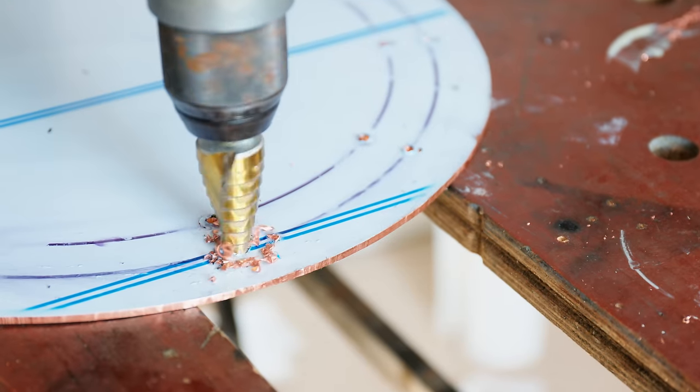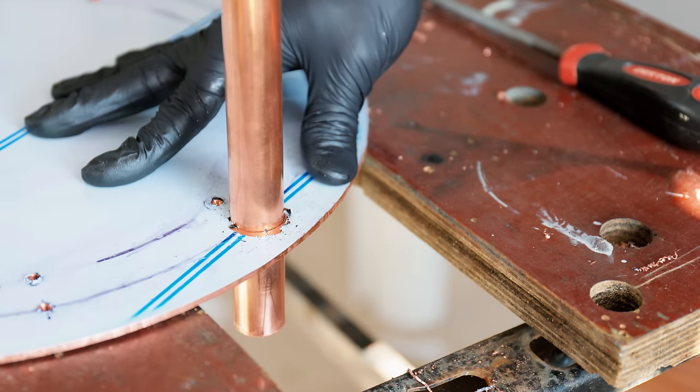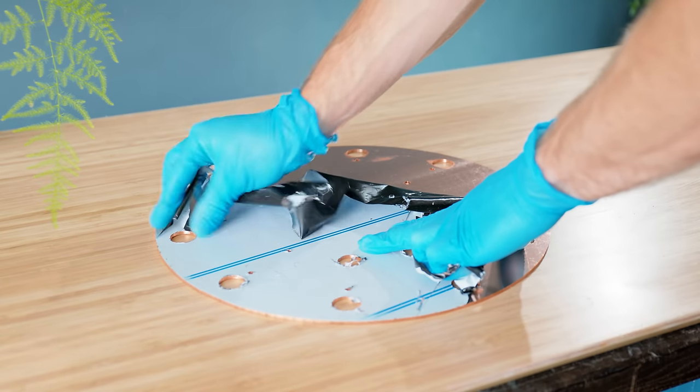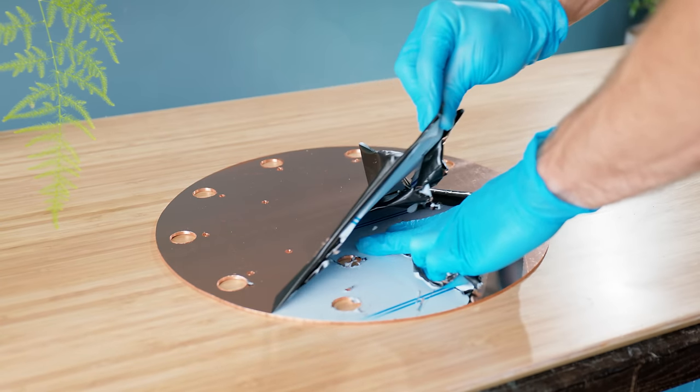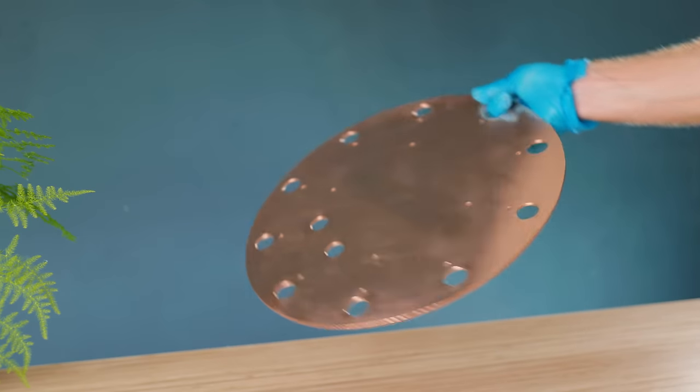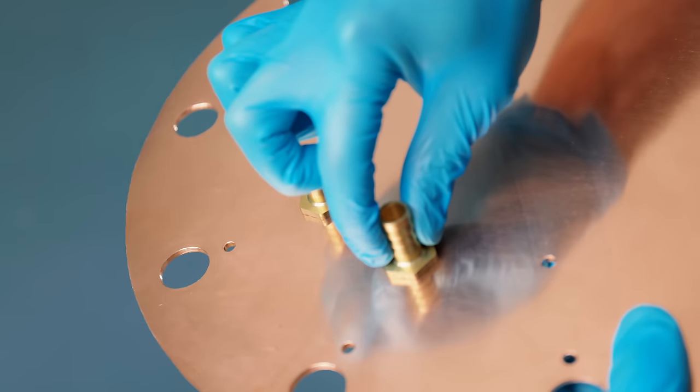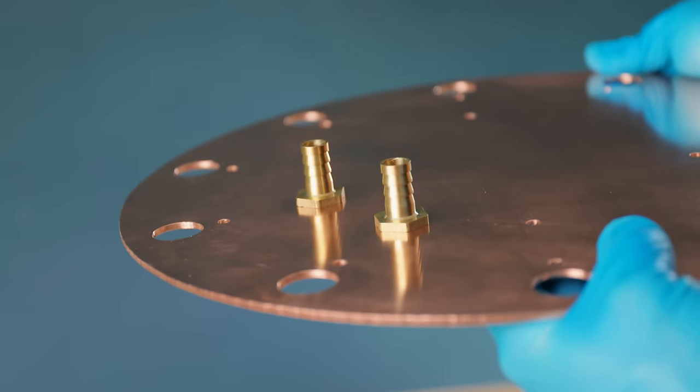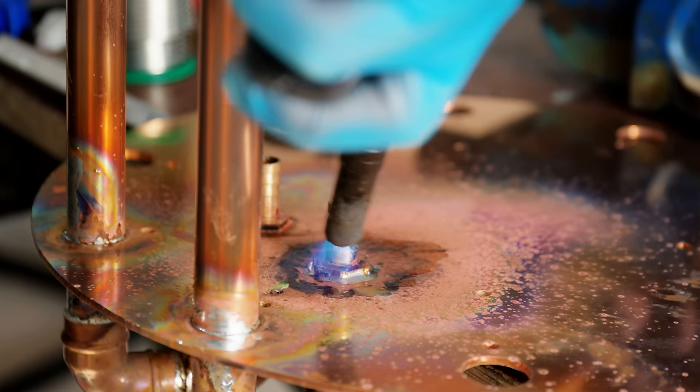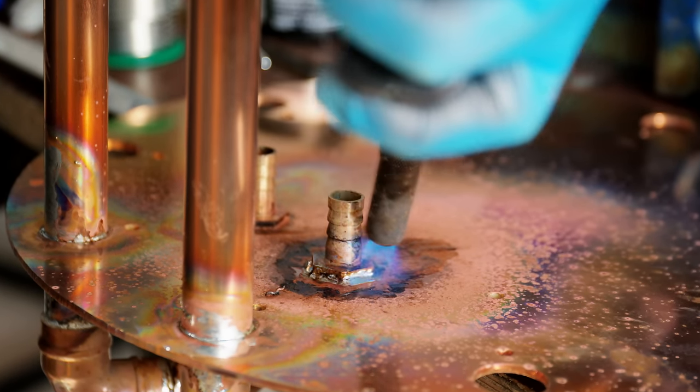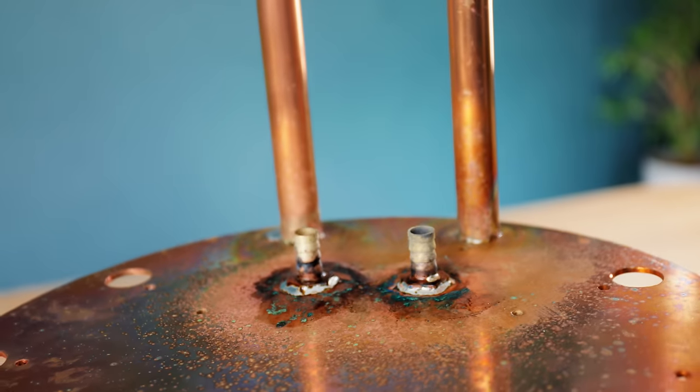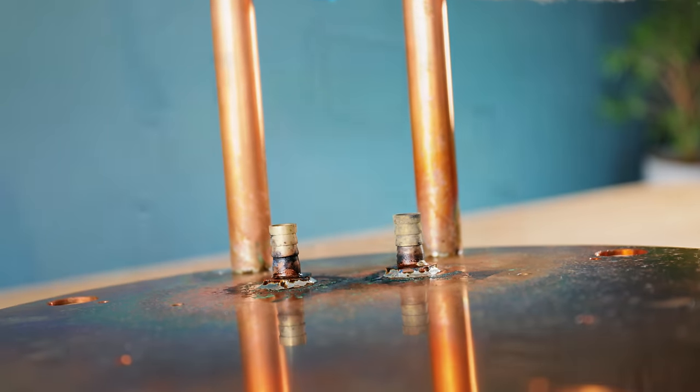Being a sealed loop with its own pure coolant means that the delicate heat transfer blocks that cool the components themselves will be protected from external contaminants like silt and algae. To make these copper pipes into a frame, I'm using the end caps themselves as a base, by carefully drilling a ring of holes that are just big enough for the pipes to fit through.